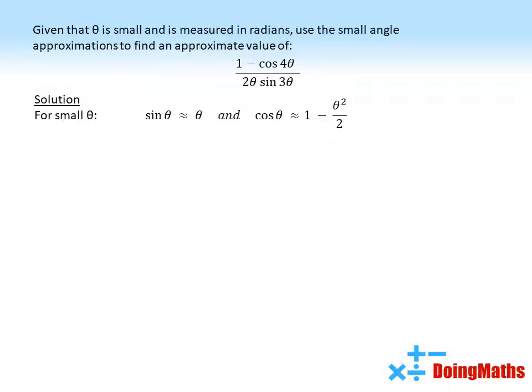To start with, we need to note that for small theta, sin theta is approximately equal to theta, and cos theta is approximately equal to 1 minus theta squared over 2.